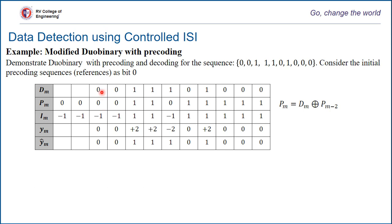For the first bit, when m equal to 1, it is d1 modulo-2 added with p minus 1 (which is 0), giving 0 XOR 0 equals 0. The next computation uses the symbol two bits away: 1 XOR 0 equals 1; 1 XOR 0 equals 1; then 1 XOR 1 equals 0 (two bits apart); 0 XOR 1 equals 1; and 1 XOR 0 equals 1. This continues until the last bit, generating the complete precoded modified duobinary sequence.